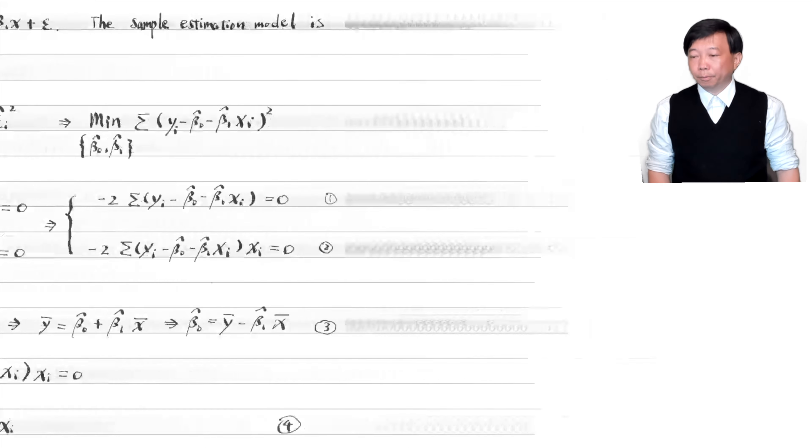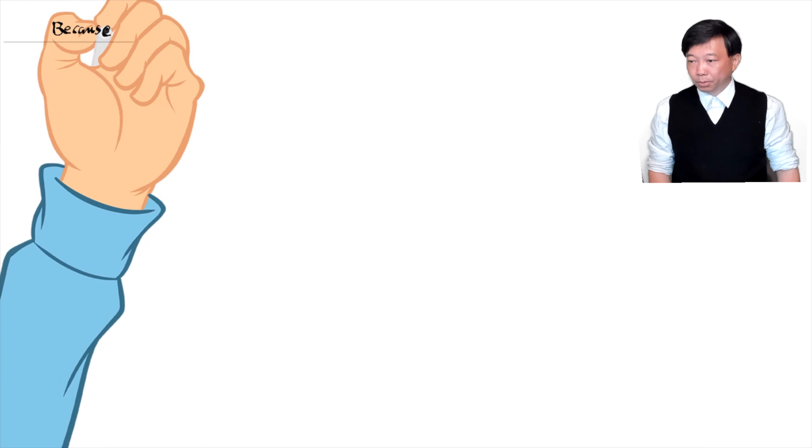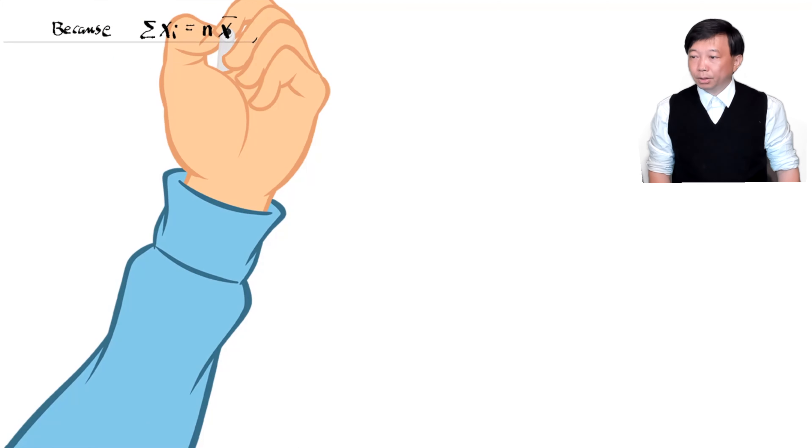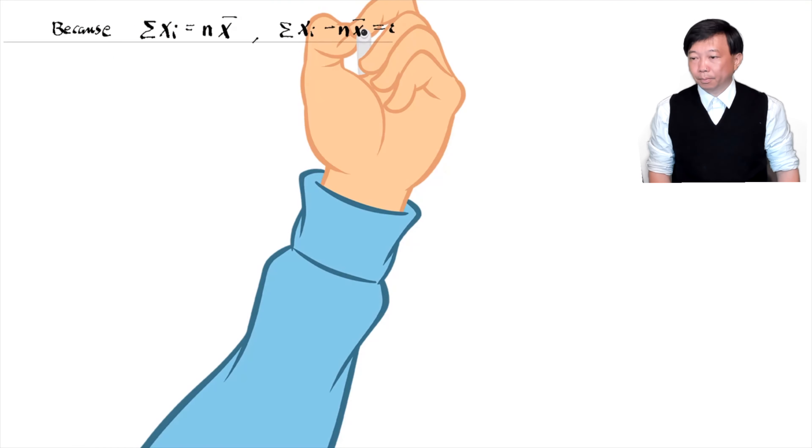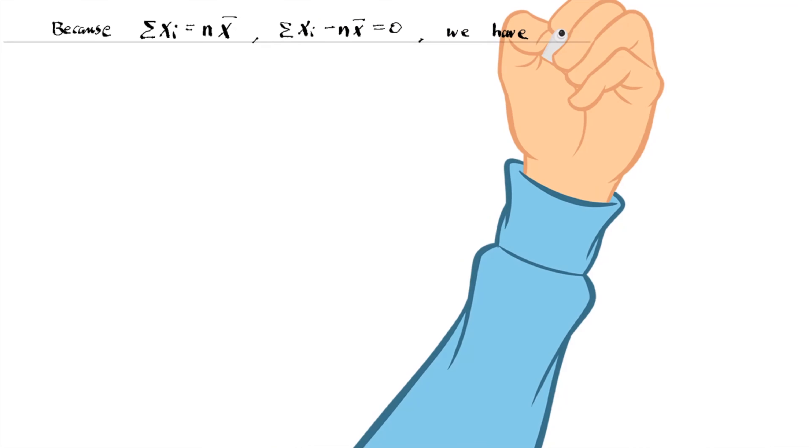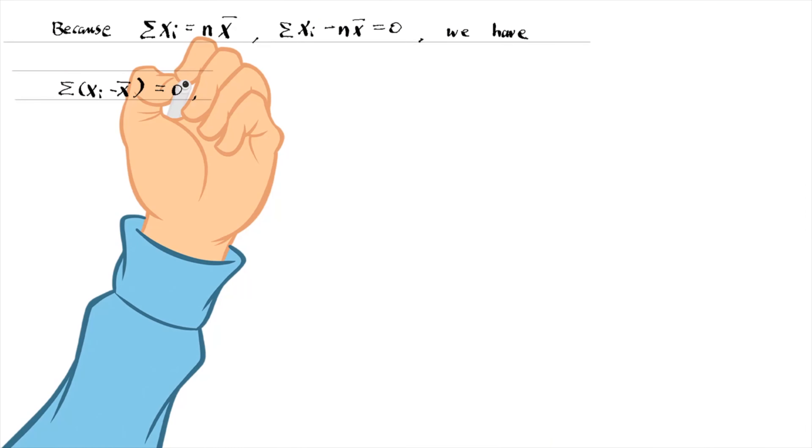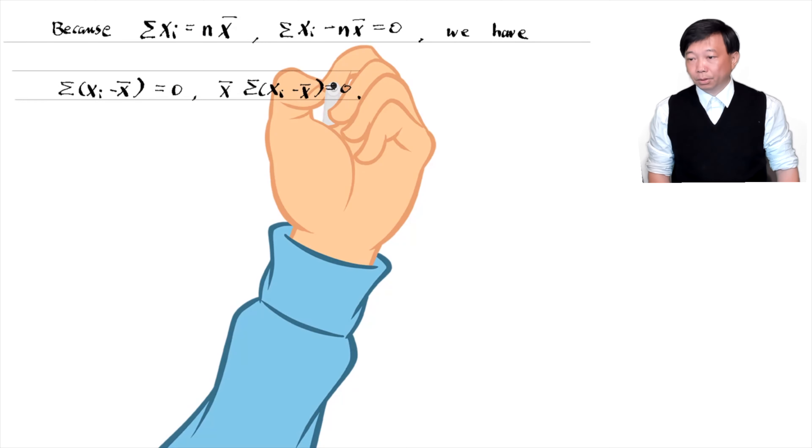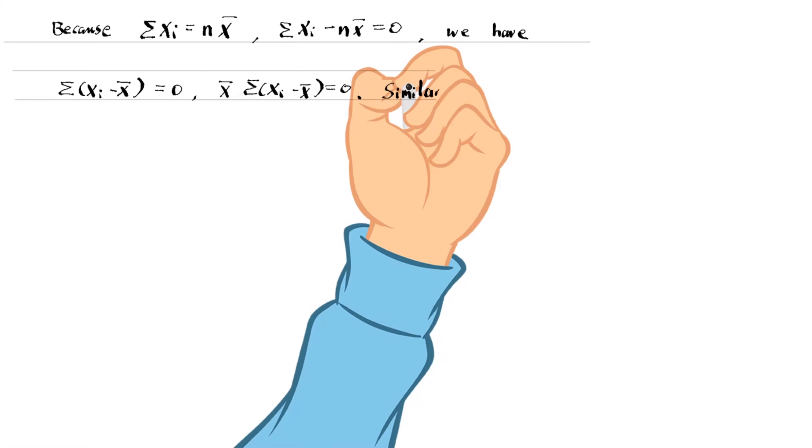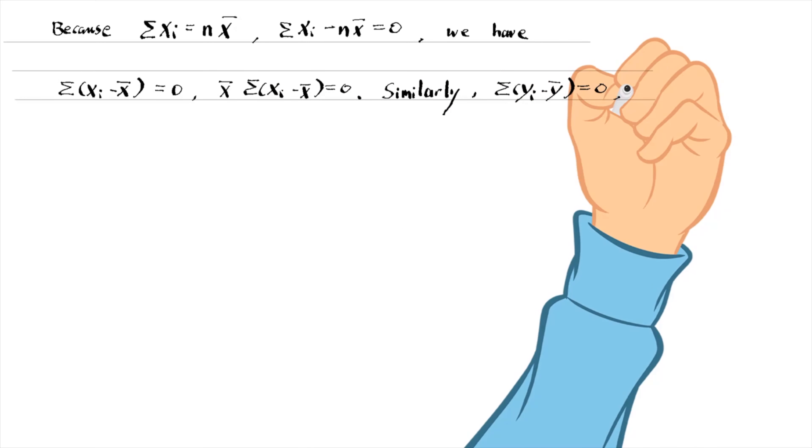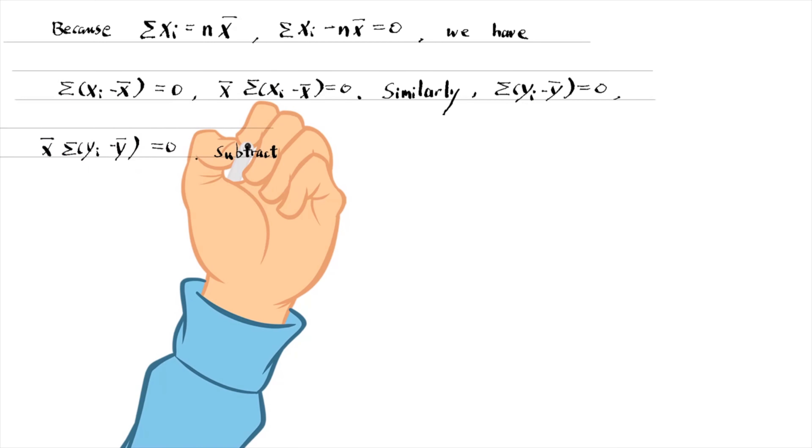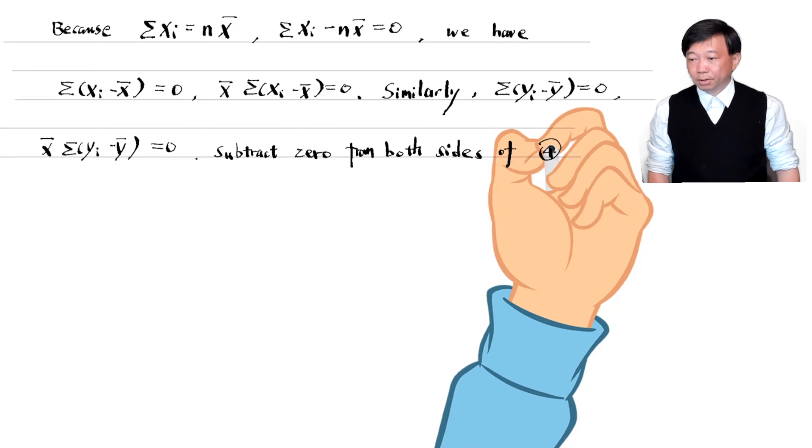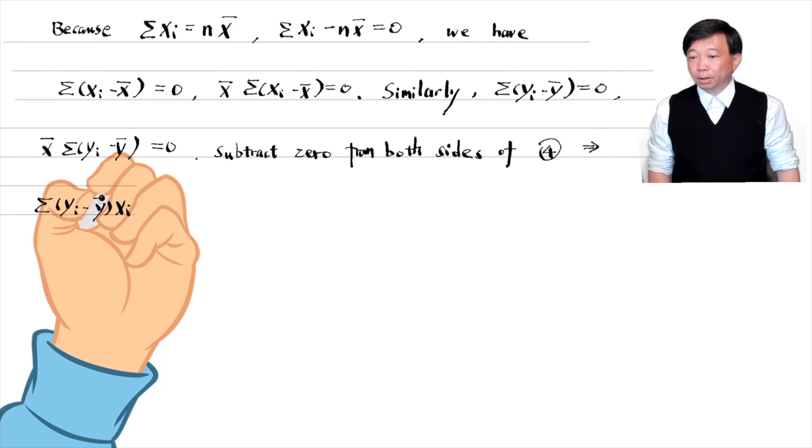Then we use the fact that the sample sum of x equals n times the sample mean of x. A constant multiplied by 0 equals 0. We subtract 0 from both sides of equation 4.